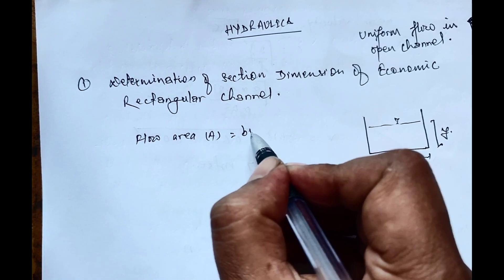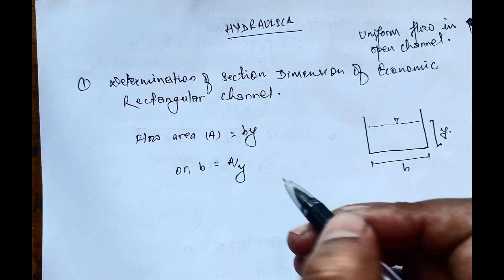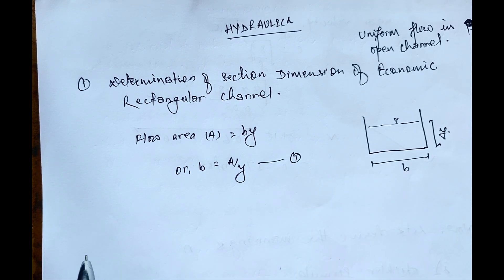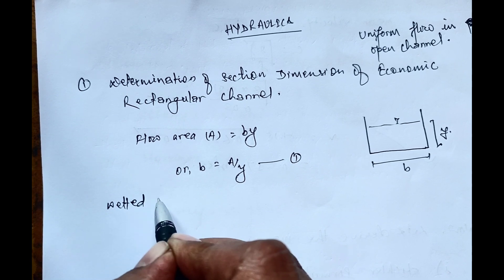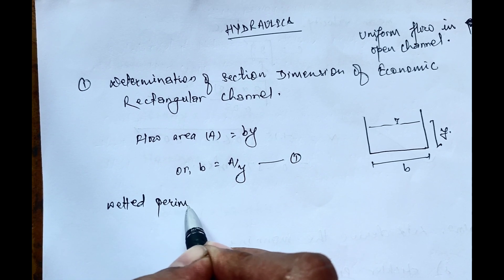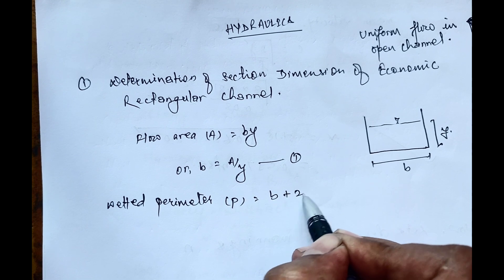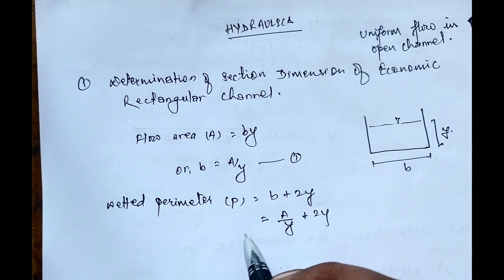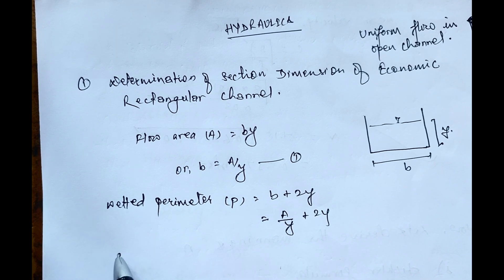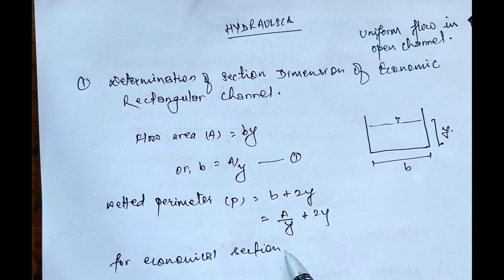The flow area A of a rectangular channel is B times y, where B equals A divided by y — this is Equation 1. The wetted perimeter P equals B plus 2y, which can be written as A/y plus 2y.